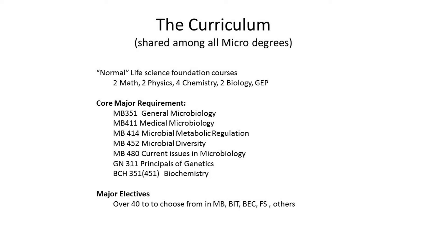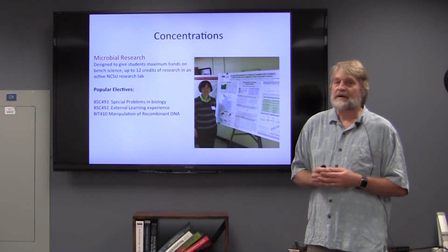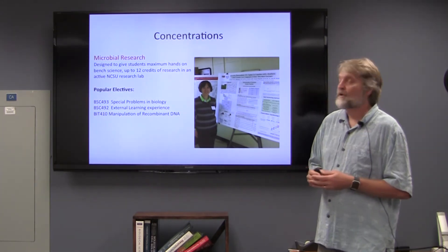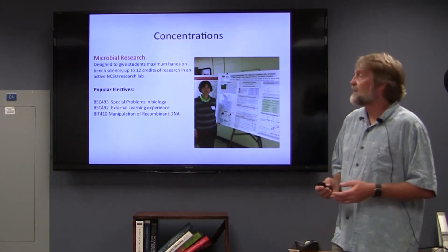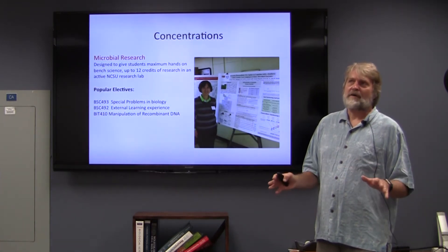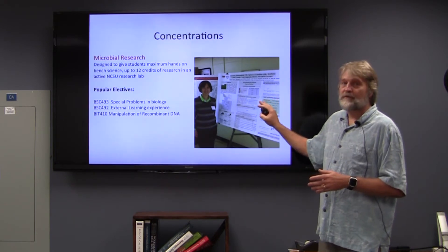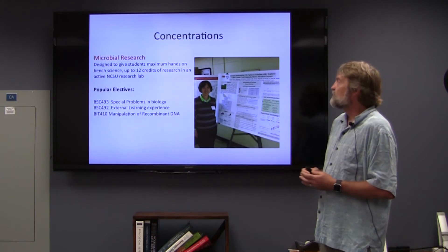All of our majors take principles of genetics and biochemistry. In addition to this, we have about 40 major electives that you can choose. If you're in the microbial research concentration, popular electives include BSC 493 — special problems in microbiology — where you actually do research in a laboratory somewhere on campus. We have about 80 microbiology labs at about five colleges, and you'll work with graduate students, postdocs, and PIs, getting valuable experience.